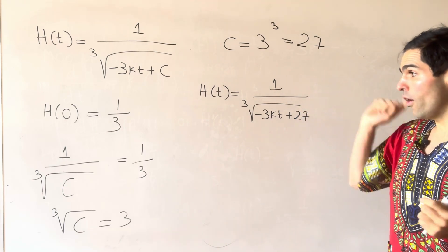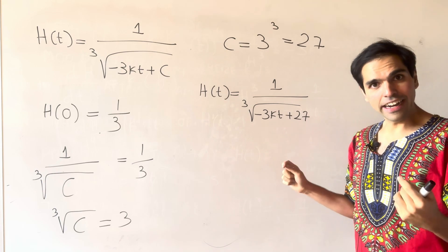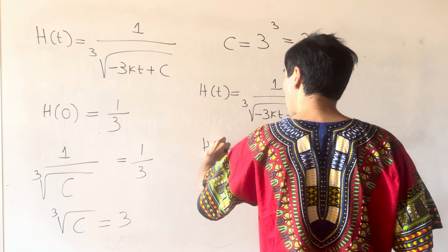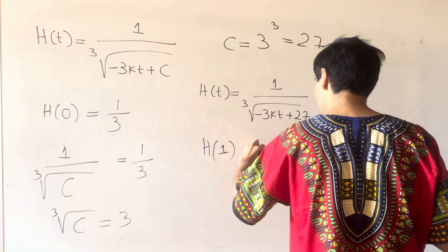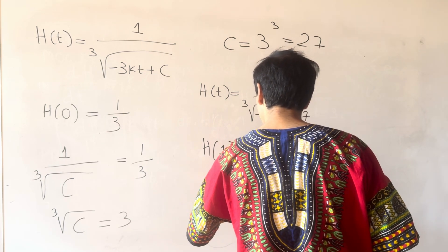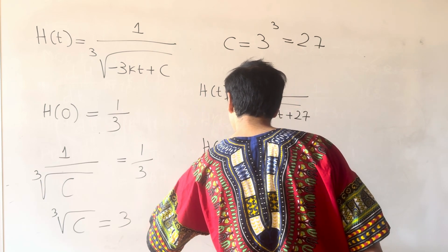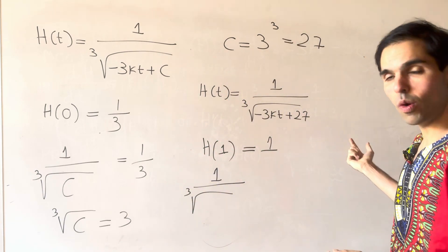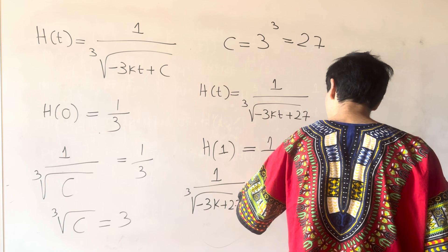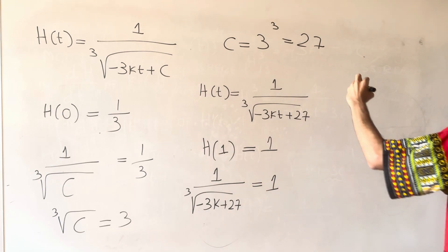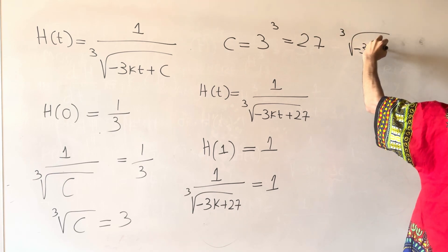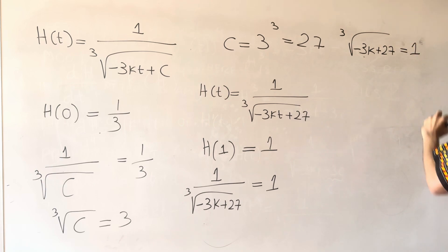Next up, we also know the additional info that at 9 a.m., the happiness is 1 utile. So, this really means one hour after 8 a.m., so H of 1, we have 1 utile. And now, we can plug this in. So, in other words, 1 over cube root of minus 3K times 1, so minus 3K plus 27, that is 1. So, just take the reciprocal. So, cube root of minus 3K plus 27, that is 1.